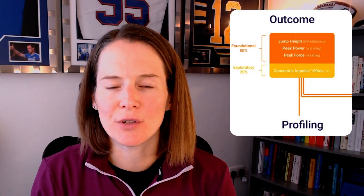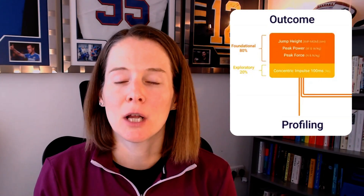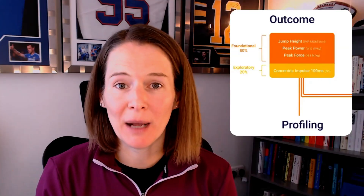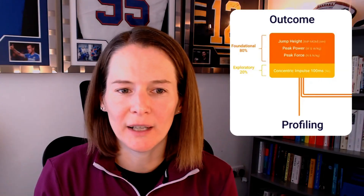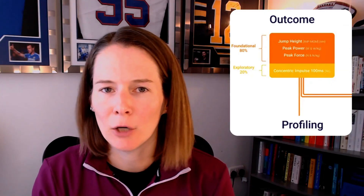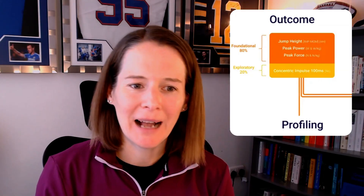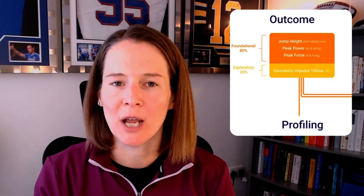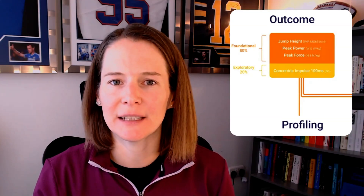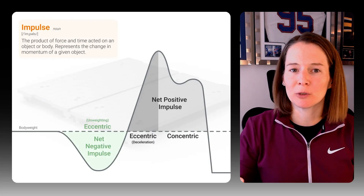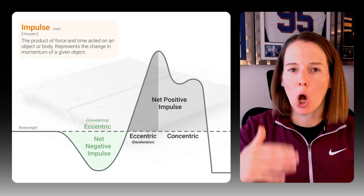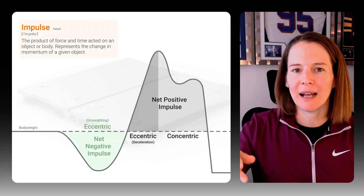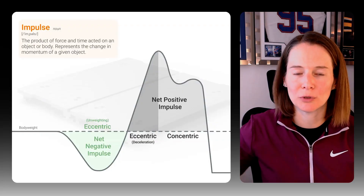Jump outcome measures are most commonly things like jump height, peak power — perhaps absolute or relative to body weight — and peak force, again absolute or relative. We might also look at impulse, which is the interaction between the force an individual applies over time, and we can think of it as the area under the force-time curve.